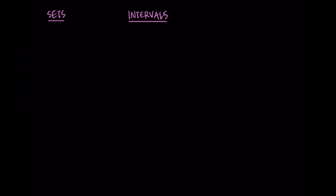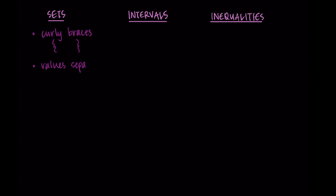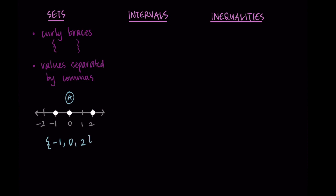So we're going to go through set notation, interval notation, and inequality notation and practice using these with our examples. With set notation, we use curly braces — these squiggly-looking ones — and inside these we put the values from our finite number of points with commas. So for us, we have negative one, zero, and two as our points, and I would just write negative one, comma, zero, comma, two to represent those individual points.